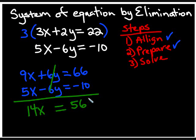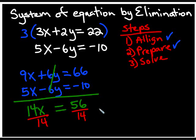Now what we have to do is divide both sides by 14. 56 divided by 14 gives us x is equal to 4. So now we have one solution already solved.